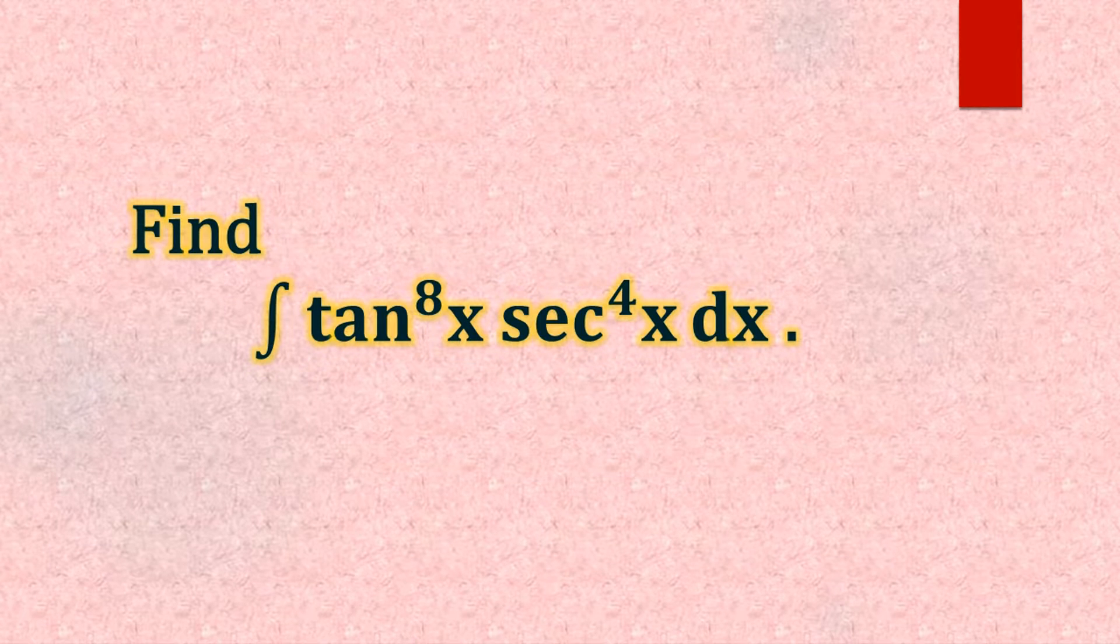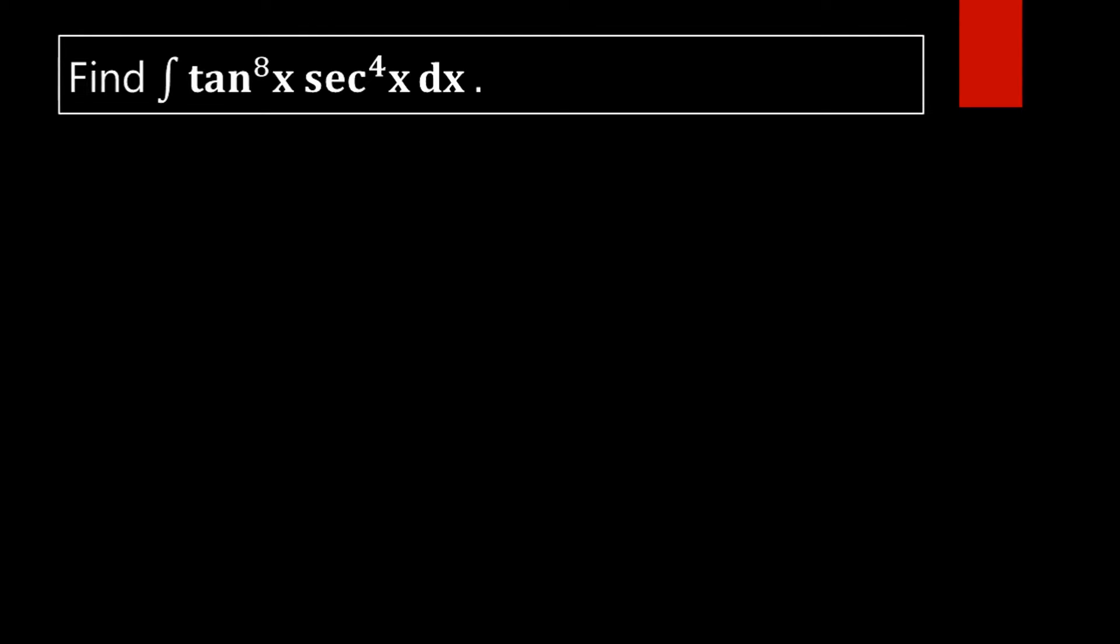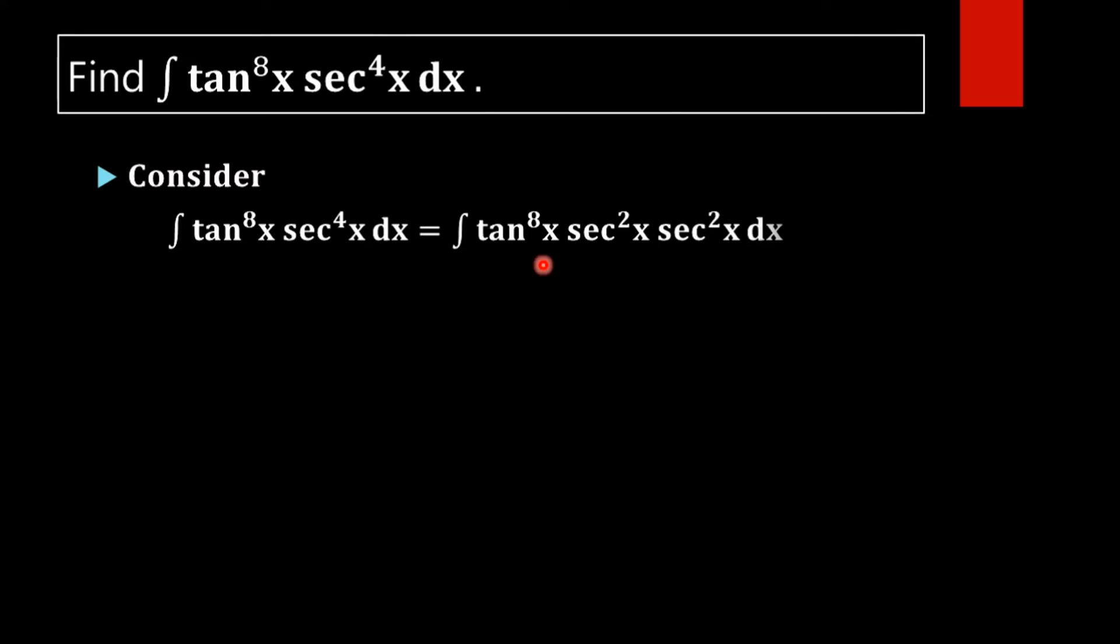Find integral tan raised to 8x into sec raised to 4x dx. Here we have to find the value of integral tan^8(x) into sec^4(x) dx, which is a quite easy problem. At first we are going to split sec^4(x) as sec^2(x) into sec^2(x) dx.